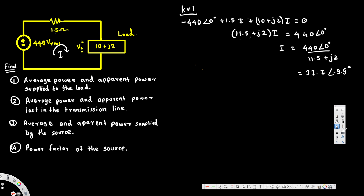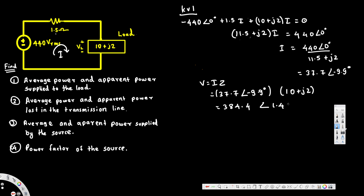Now we need to find the voltage across the load. Using V = IZ, with I = 37.7∠-9.9° and the load impedance Z = (10 + j2), we calculate the load voltage V_L = 384.4∠1.4°.